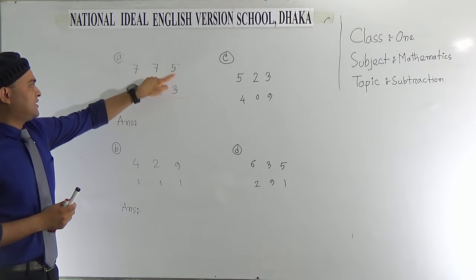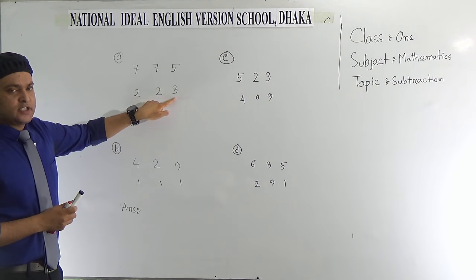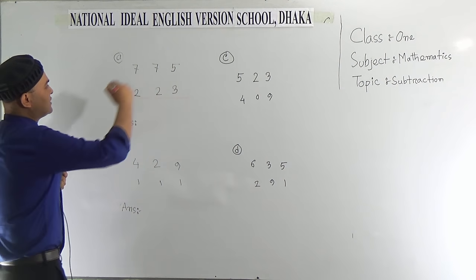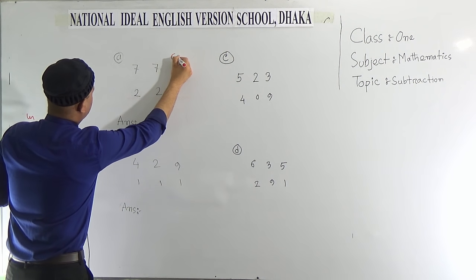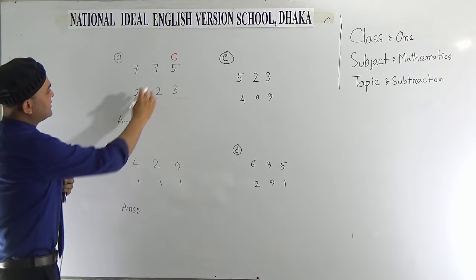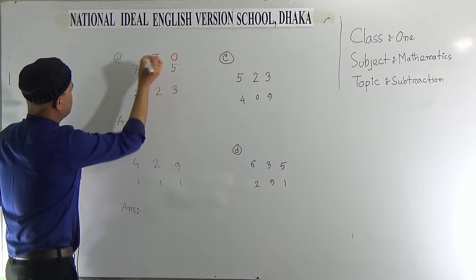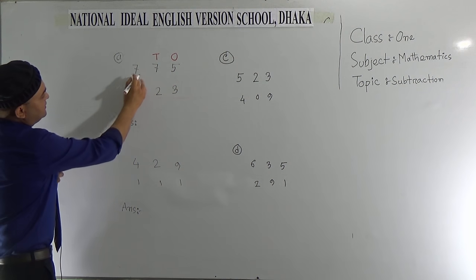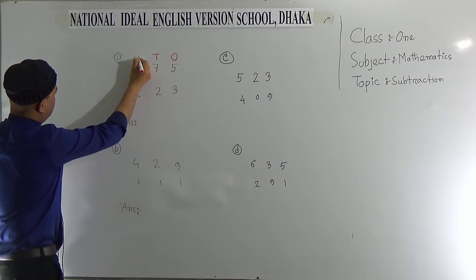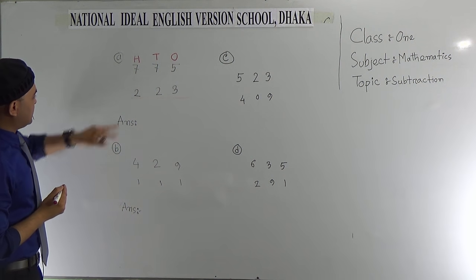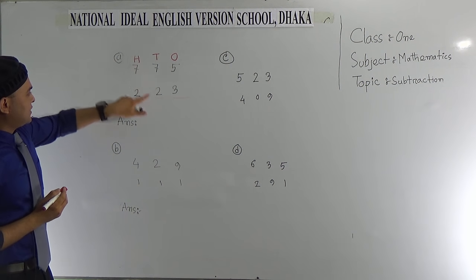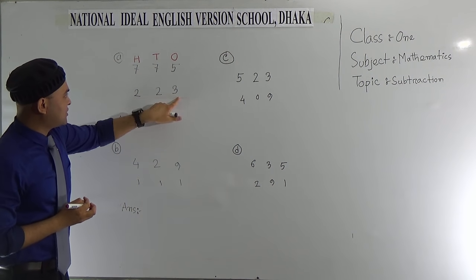Now let's do the subtraction. Here there are two numbers, 775 and 223. Let's see the place value of 5 in 775 is 1's place, 7 is in 10's place, and 7 is in 100's place. Similarly, we can say 2 is in 100's place, 2 is in 10's place, and 3 is in 1's place.